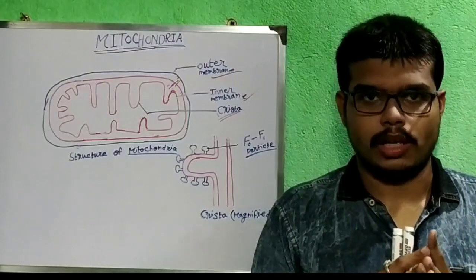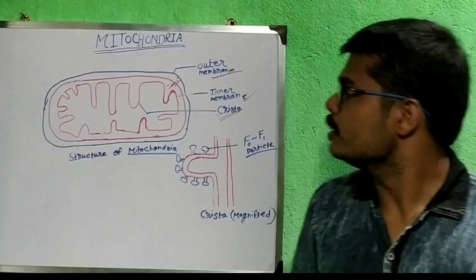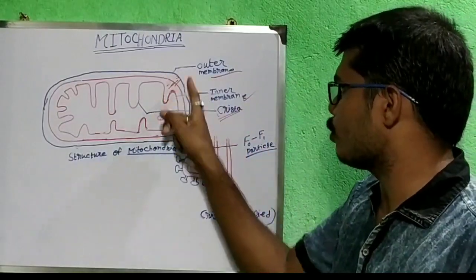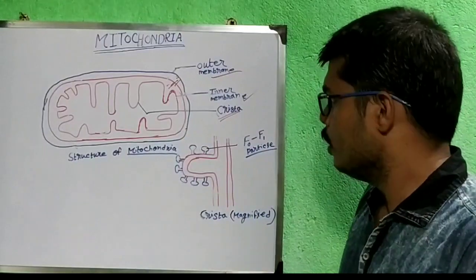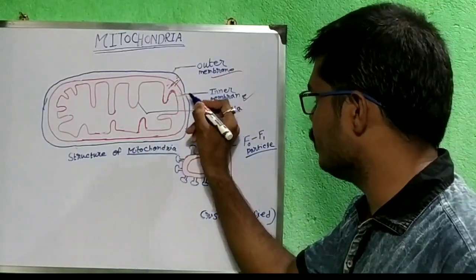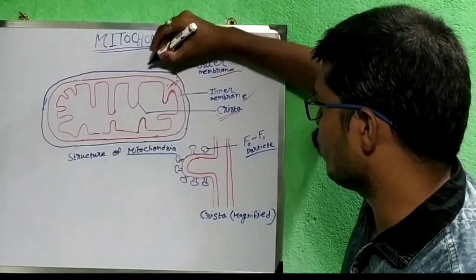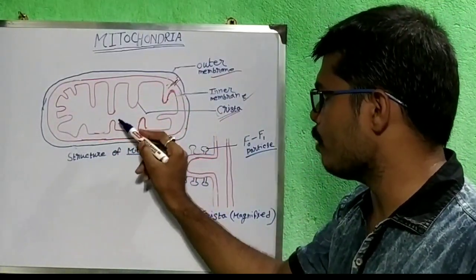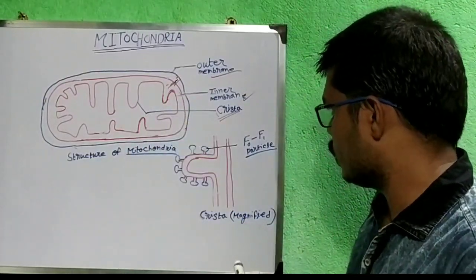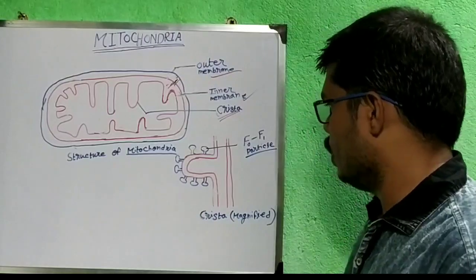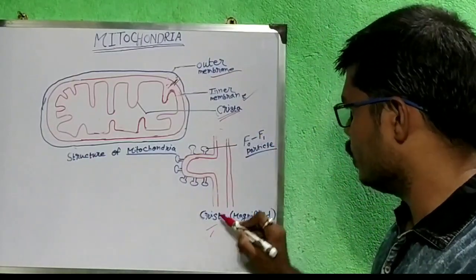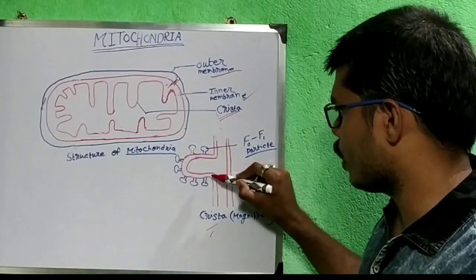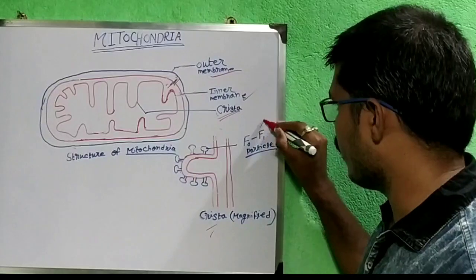Now I will discuss about the mitochondria. In this structure you can see that mitochondria has two membranes — one is outer membrane and another one is inner membrane. The outer membrane I have drawn in blue color and the inner membrane in red color. The space between these two membranes is known as perinuclear space. This inner membrane has some foldings — these foldings are known as cristae. If we magnify these cristae, we find some knob-like structures present on the outer surface of the cristae. These are known as F0-F1 particles.